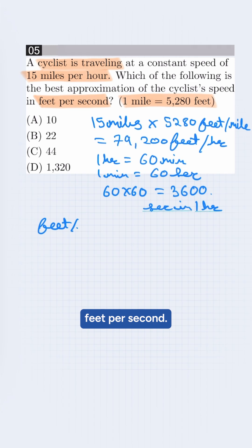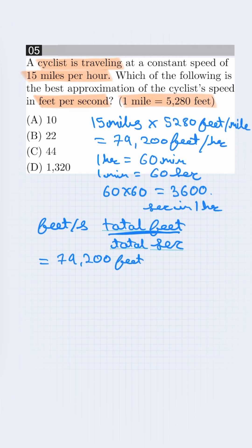We calculate feet per second. So we divide the total feet by total seconds. This will be 79,200 feet divided by 3,600 seconds. This will be 22 feet per second. This is our answer. So correct option will be B.